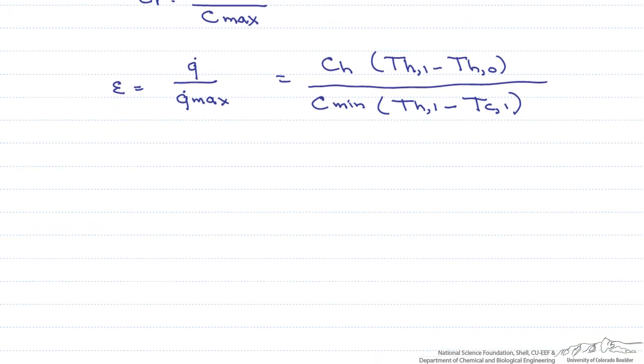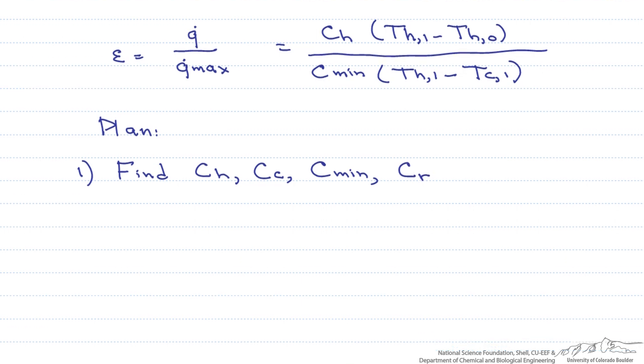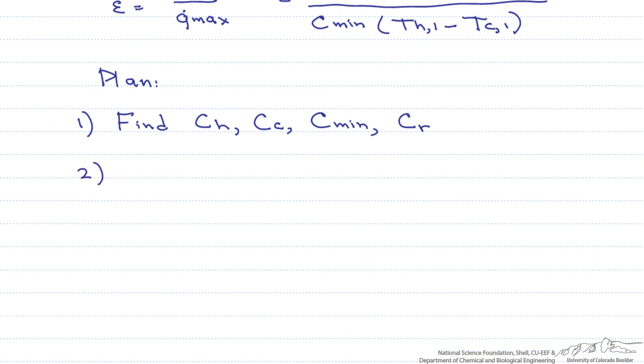Now that we have that effectiveness we can calculate our NTU. So what is our plan? First we are going to calculate our heat capacity rates, both hot and cold. From that we can figure out what our minimum heat capacity rate is and then find the ratio of C min over C max. Once we know that, we can solve for our effectiveness. This allows us to use the relationship between the two to solve for NTU. And finally, once we have NTU, we can solve for our overall heat transfer coefficient. Let's get started.